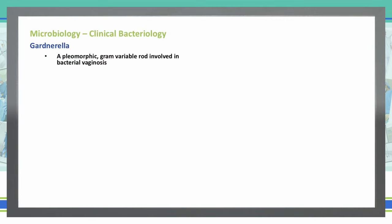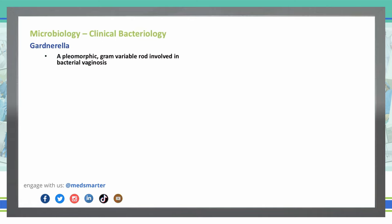Gardnerella is a pleomorphic gram-variable rod involved in bacterial vaginosis. Pleomorphic in this context means that it's going to be irregular in regards to its shape. Gardnerella is gram-variable, meaning that it can have some aspects that are gram-positive and gram-negative.